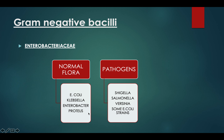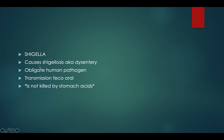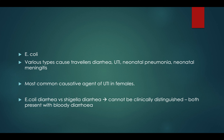Klebsiella is important because it causes pneumonia in immunocompromised patients, especially those with AIDS. Shigella causes shigellosis, also known as dysentery. Just remember two features of dysentery: severe abdominal cramps and massive diarrhea. Shigella is an obligate human pathogen — it cannot grow in anything else. Transmission is feco-oral, and it's not killed by stomach acids.